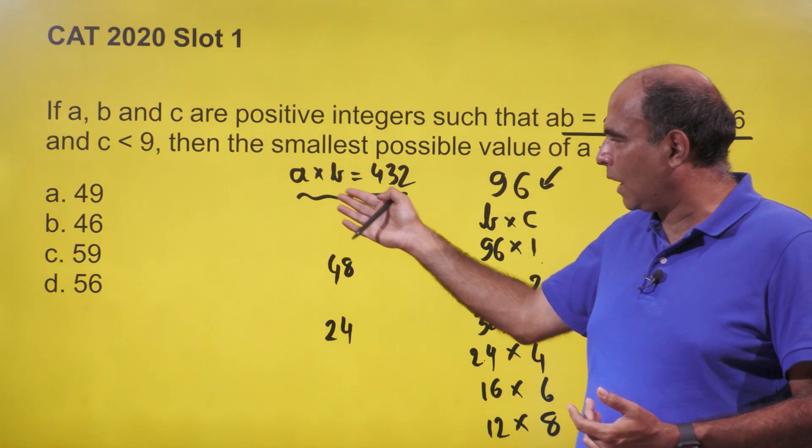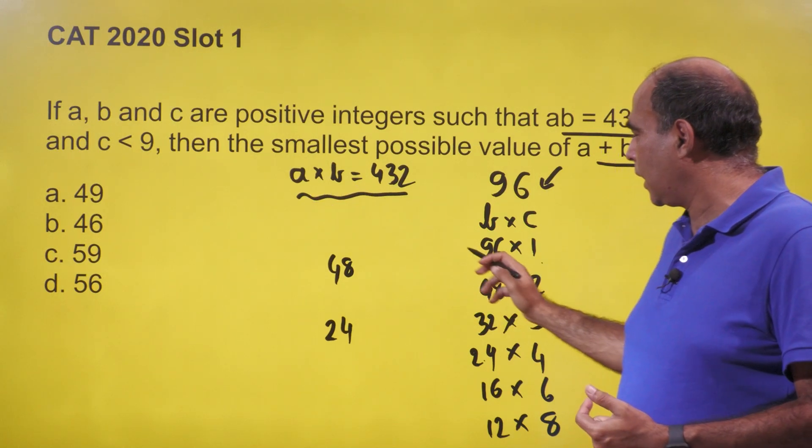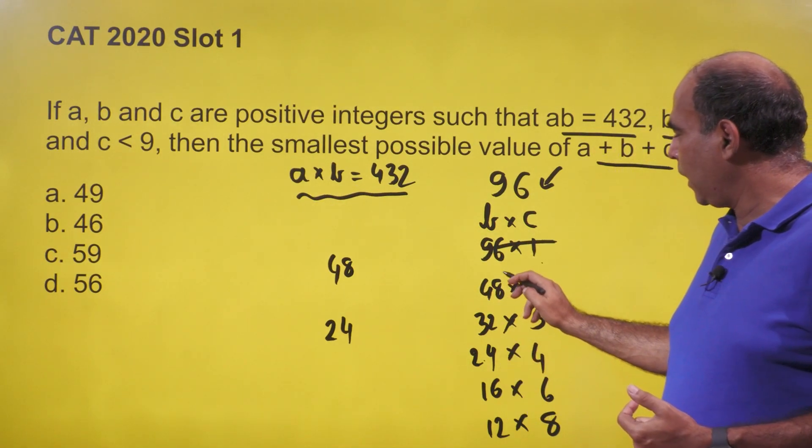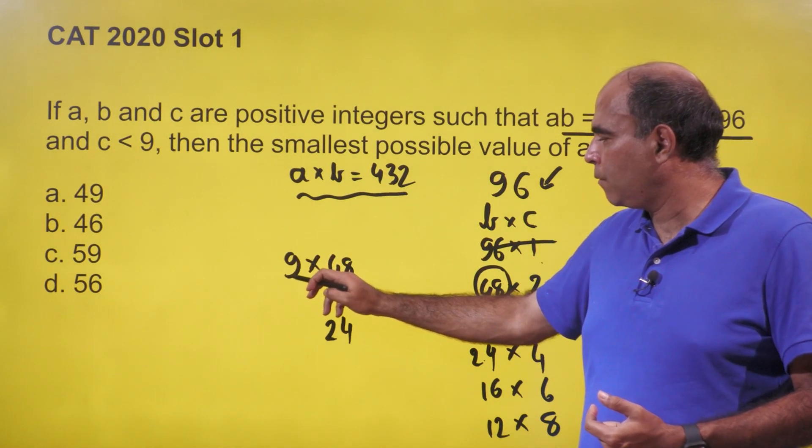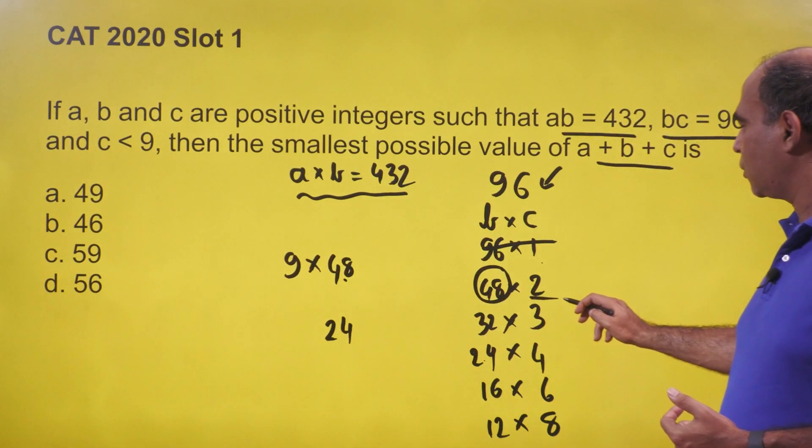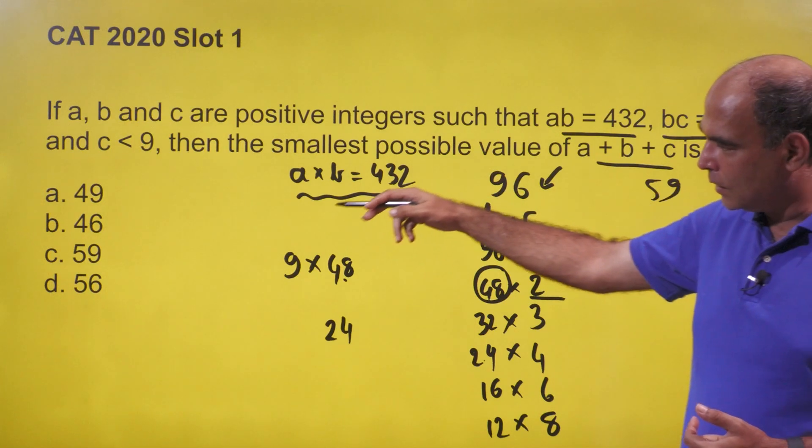If we take b = 48, then a = 432/48 = 9, and c = 96/48 = 2. So a + b + c = 9 + 48 + 2 = 59. This is an option, but there might be lower values.